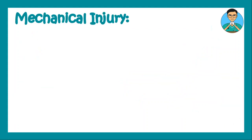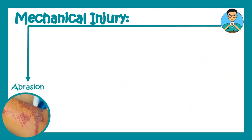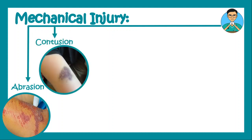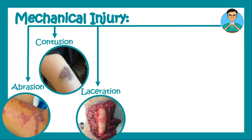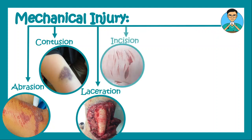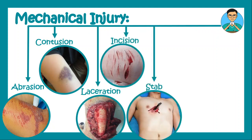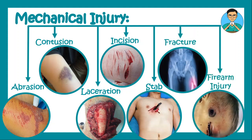Mechanical injury can be an abrasion, which is a simple scratch over the skin; a contusion, which is simply known as a bruise; a laceration; an incision; a stab injury; a fracture; or a firearm injury, as in a bullet wound.